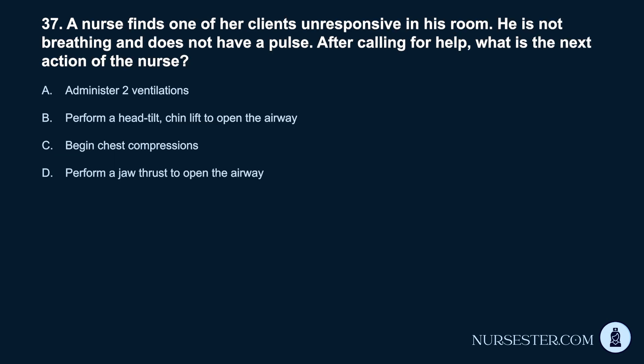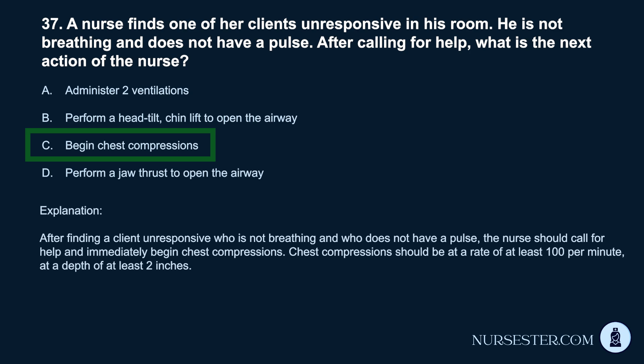Question 37. A nurse finds one of her clients unresponsive in his room. He is not breathing and does not have a pulse. After calling for help, what is the next action of the nurse? a. Administer two ventilations. b. Perform a head tilt, chin lift to open the airway. c. Begin chest compressions. d. Perform a jaw thrust to open the airway. Correct answer: c. Begin chest compressions. After finding a client unresponsive who is not breathing and has no pulse, the nurse should call for help and immediately begin chest compressions at a rate of at least 100 per minute and at a depth of at least 2 inches.